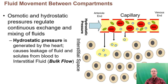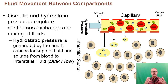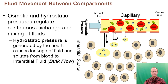Fluids move between compartments chiefly using either osmotic or hydrostatic pressure. Hydrostatic pressure is generated by the heart and ventricles. As they contract, they generate a force on the blood, and that hydrostatic pressure is very high at the arterial end of a capillary bed, causing stuff to leak out through the process of filtration, also called bulk flow.